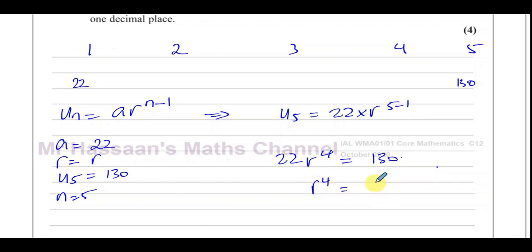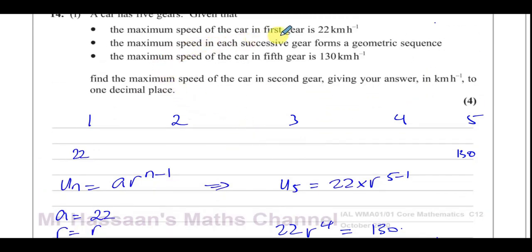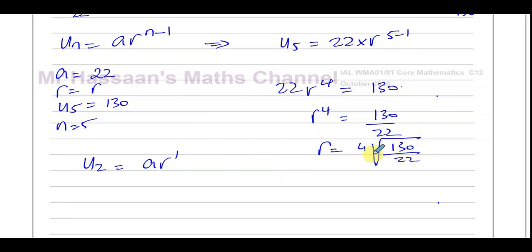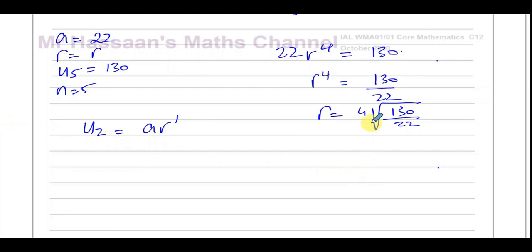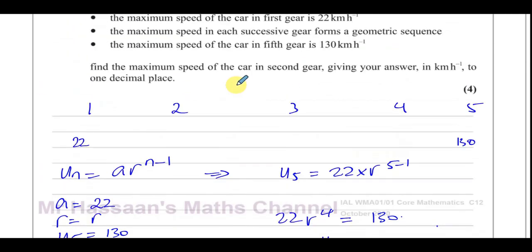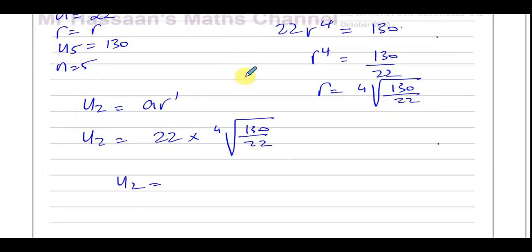That means R to the power of 4 equals 130 over 22. We want to find the maximum speed in second gear, so we want to find U2. U2 equals A times R to the power of 1, because it's 2 minus 1. So we need R, which is the fourth root of 130 over 22. I'll leave it in this form and use it in my answer. So U2 equals 22 times the fourth root of 130 over 22.